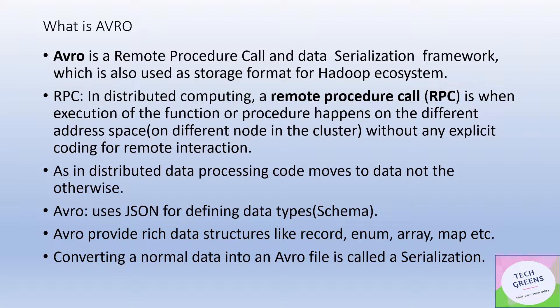In distributed computing, the first rule is that your code goes to the data — not the other way around. In the monolithic world, data goes to the program. But in distributed big data systems, since code is small and data is huge, the code goes to the data residing on different nodes of a cluster. An RPC framework facilitates the execution of a program, procedure, or function on a remote node without the programmer explicitly defining that — it's handled behind the scenes.